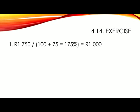Exercise 4.14. For number 1, the markup is given as 75%. So you would need to take your selling price of 1,750 and divide it by 100 plus 75, or 175%, to get 1,000 Rand. Remember that you need to include the 100 in your calculation here, as this accounts for the cost price to which the markup was added.